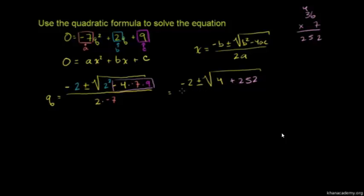The denominator is 2 × -7 = -14. This equals -2 ± √256 / -14. What's the square root of 256? It's 16. You can try it - 16 × 16 = 256. So we can rewrite this as -2 ± 16 / -14.